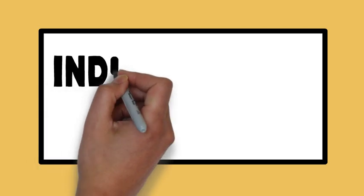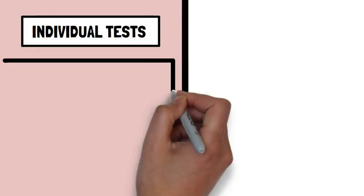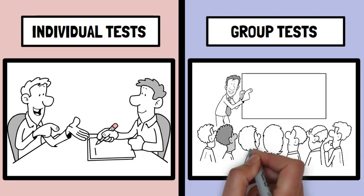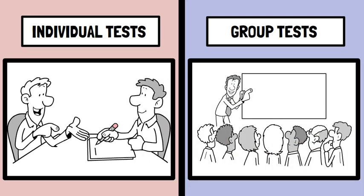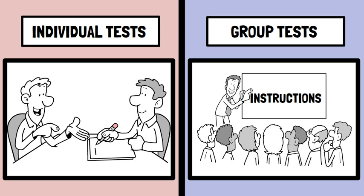Depending on the mode of administration, psychological tests are divided into individual or group tests. An individual test is administered by the researcher to one person at a time, while group tests can be administered to a large number of people simultaneously. In individual tests, the researcher administers the test face to face and notes down the responses. In a group test, the instructions are written on the test which the test taker reads and answers accordingly, while the test administrator explains the instructions to the entire group.